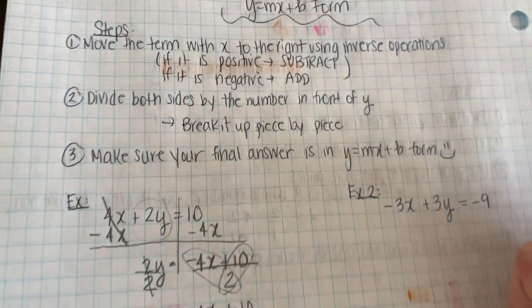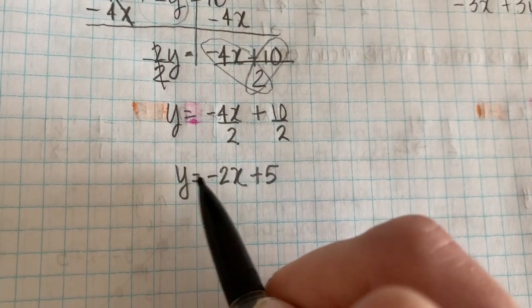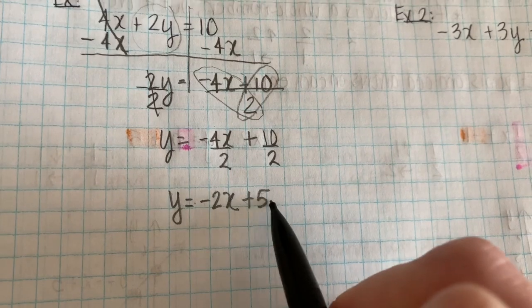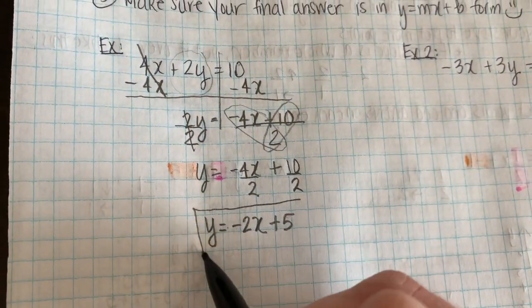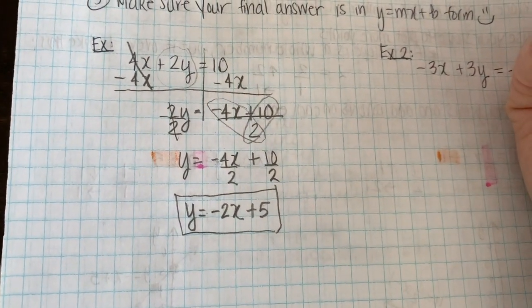And your final step is to make sure that you're in y equals mx plus b form. And look, sure enough, I am. Y equals mx plus b. That's my answer. The trickiest part is going to be breaking up your division. Everything else is nice and easy.